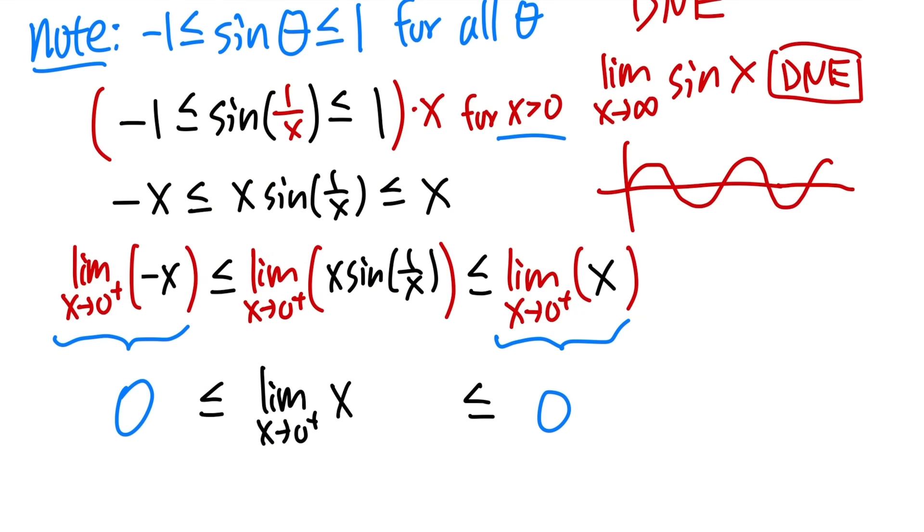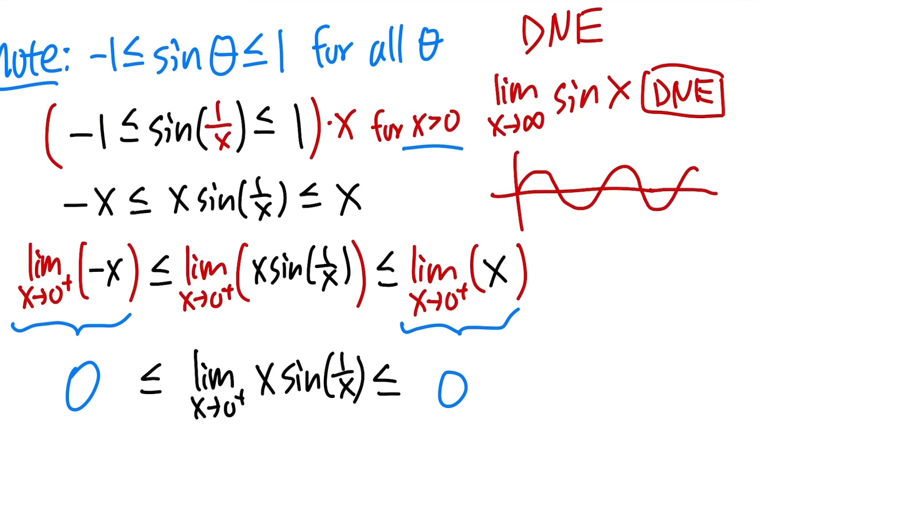x approaching 0 plus, of x sine of 1 over x. This limit is in between of 0 and 0, with the equal sign. So, that means, right, this means, I'll just put this down, this means that the limit as x approaching 0 plus, of x sine of 1 over x, this must be equal to 0.